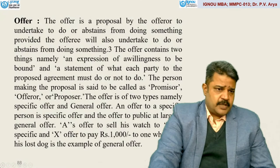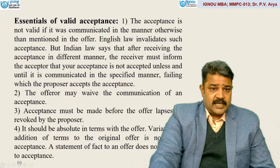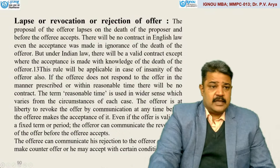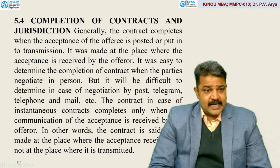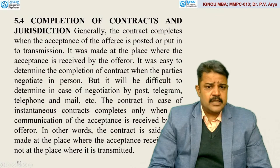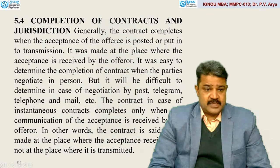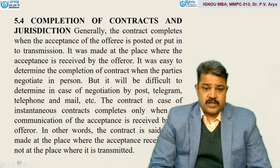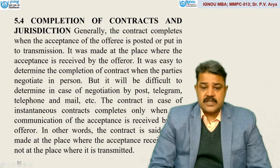Formation of contracts is based on agreement, offer, and acceptance. When two parties agree, one offers and the other accepts — they are essentially due for valid acceptance. It is not by force; it is on mutual terms. Then there is lapse or revocation or rejection of offer. As for completion of contract and jurisdiction: generally, the contract completes when the acceptance of the offer is posted or put into transmission, made at the place where the acceptance is received by the offeror. It was easy to determine the completion of contract when parties negotiate in person, but it is difficult in cases of negotiation by post, telegram, telephone, or mail. In the case of an instantaneous contract, completion occurs only when the communication of acceptance is received by the offeror — the contract is made at the place where acceptance is received, not where it is transmitted.